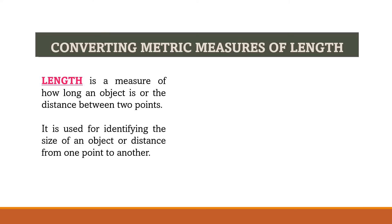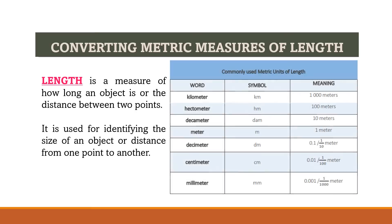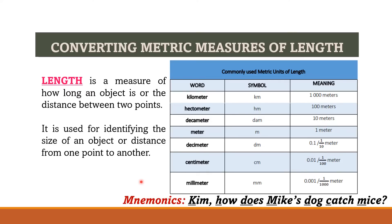We start by converting metric measures of length. Length is a measure of how long an object is, or the distance between two points. Our commonly used metric units of length are kilometer, hectometer, decameter, meter, decimeter, centimeter, and millimeter. To memorize them, we can use the mnemonic: 'Kim, how does Mike's dog catch mice?' — K for kilo, H for hecto, D for deca, M for meter, D for deci, C for centi, and M for milli. That is the arrangement of our prefixes.